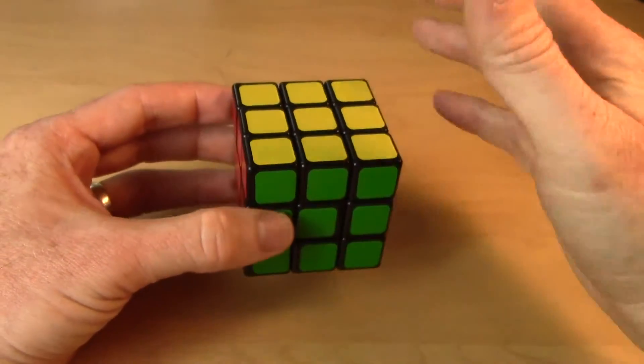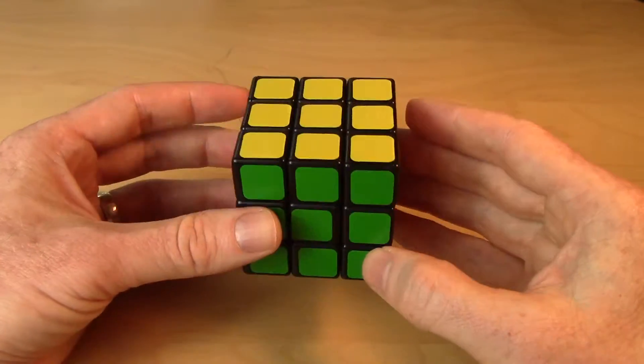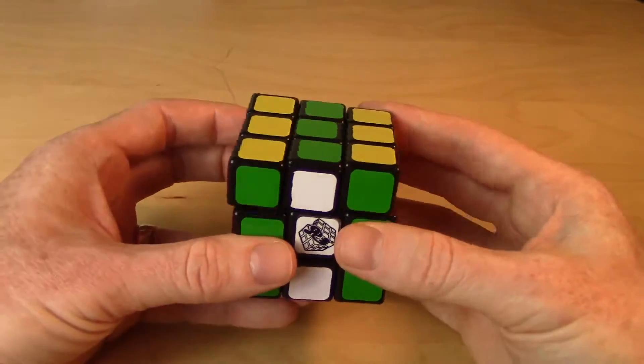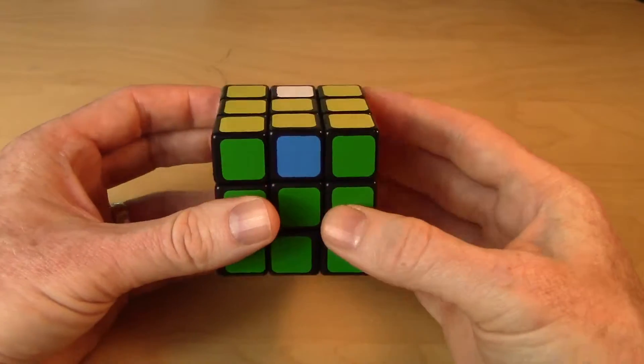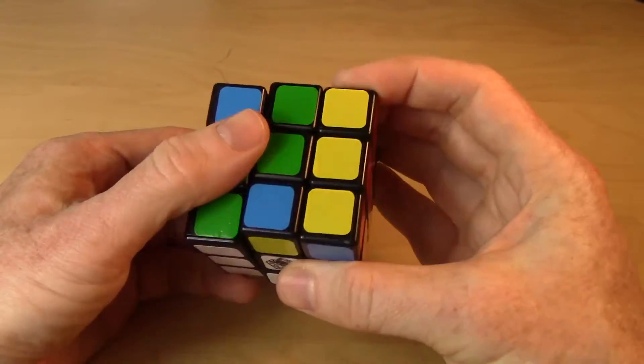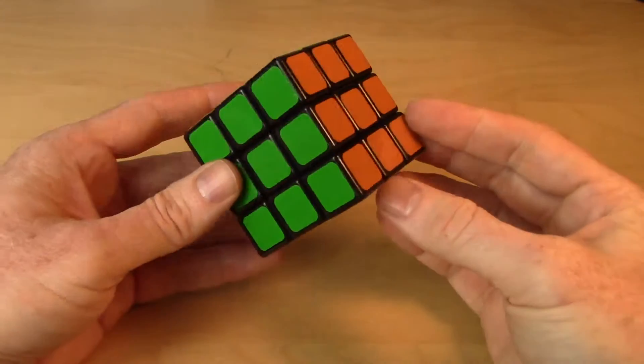So that's another edge 3-cycle that we can use. The nice thing about this edge 3-cycle, you know, it's really no different from this one on the cube, that sort of middle slice double tap the up layer. Except that it seems that the middle slice double tap is much faster.